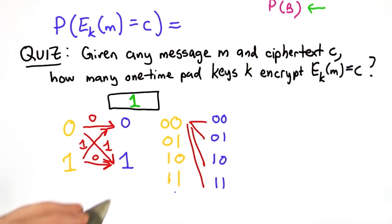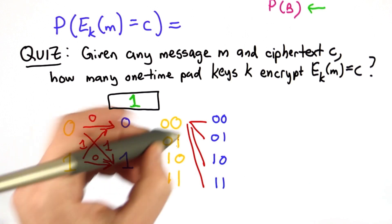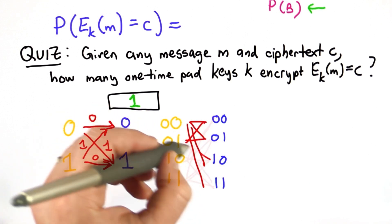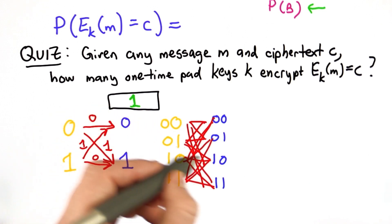If we had 2-bit messages, there would also be one key that maps each message to each different ciphertext. For example, the key that maps 0,1 to 1,0 would be the key 1,1.